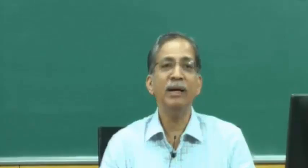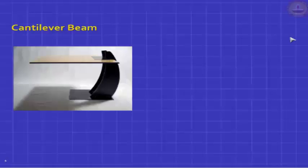Do not go away with the understanding that a beam is always a horizontal member. A beam can be inclined; it can even be vertical. The definition is that it resists loads by undergoing change in curvature. We saw a simply supported beam; now let us look at another simple beam — it is called a cantilever beam.